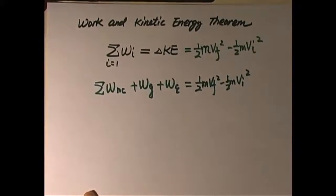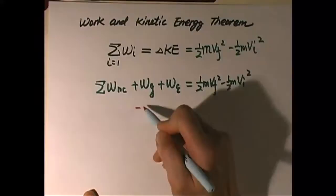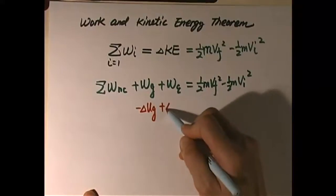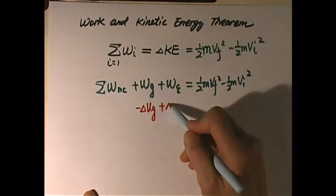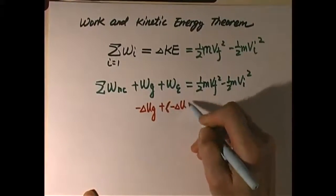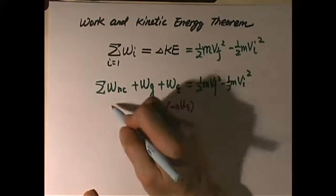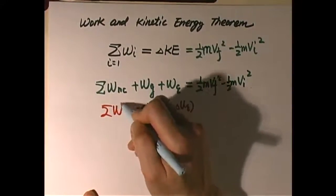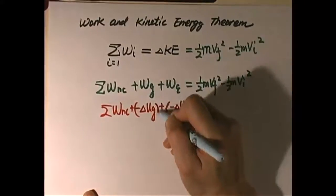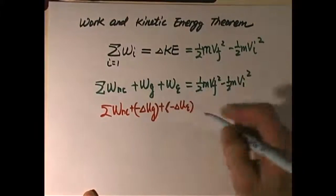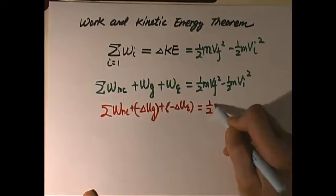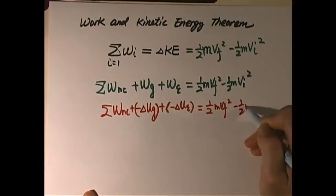Since we already worked out that work done by gravity equals negative delta U_G — negative change of gravitational potential — and work done by elastic force equals negative change of elastic potential energy, we still have sigma W for work done by all non-conservative forces. We still have the same change of kinetic energy.